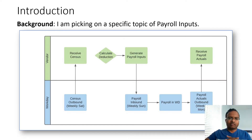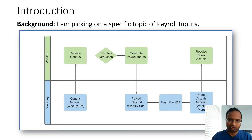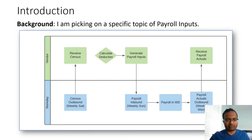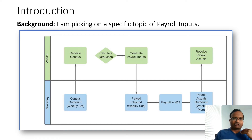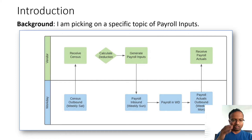Let me tell you about the business case I have taken. Let's say we have an organization of 10,000 or 20,000 employees, and we are not maintaining the benefits in-house — we have outsourced the maintenance of benefits information to a third party. To maintain these benefits, they need employee demographic information, job information, and payroll-related information.